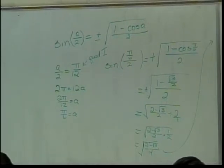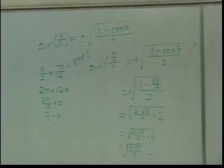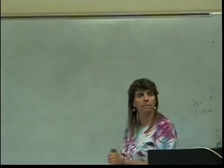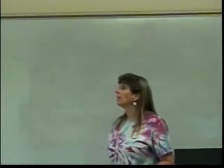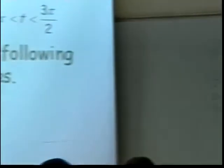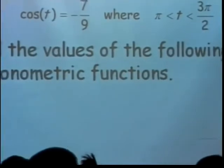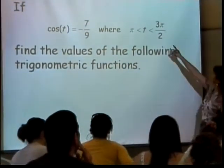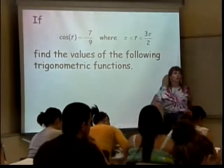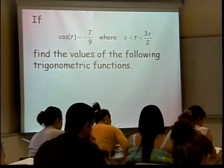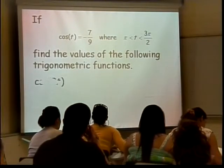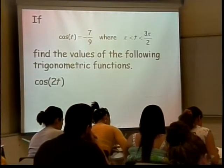How many times do we have to do this problem? This will be almost the end. I'm going to tell you now that the cosine of t is negative 7 over 9, and that the angle t is between pi and 3 pi over 2. Now using all the identities we have, I want you to calculate the cosine of 2t.